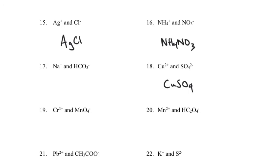Looking at number 22: we have a potassium ion with a plus one charge and a sulfate ion with a negative two charge. Now my charges aren't initially balanced. I'm going to need one additional potassium ion to balance the negative two charge on the sulfate. So in my formula, I need two potassiums and one sulfate. Potassium gets a subscript of 2 beneath the line, and then one sulfate — the formula is K2SO4.